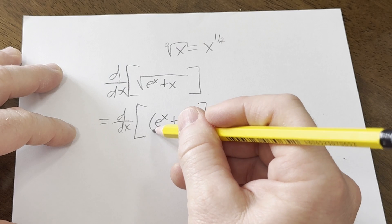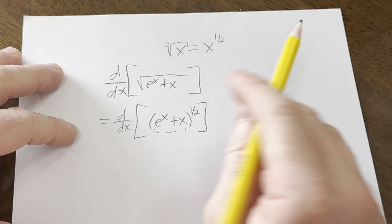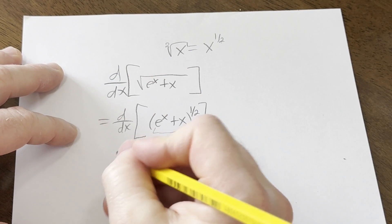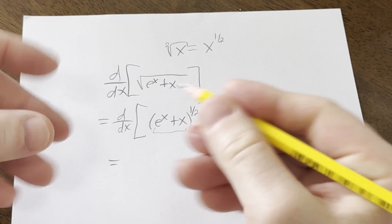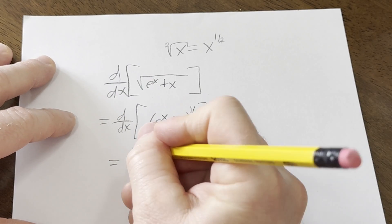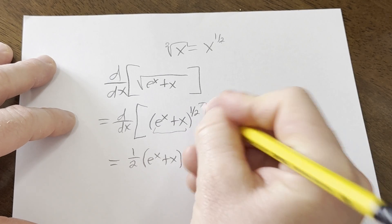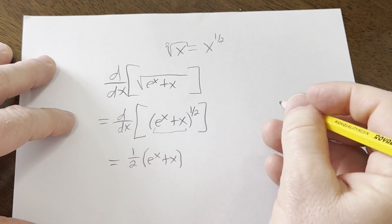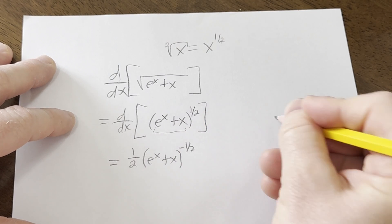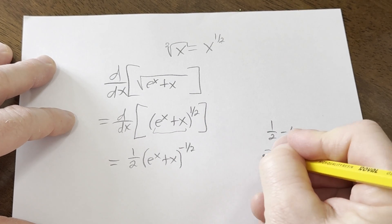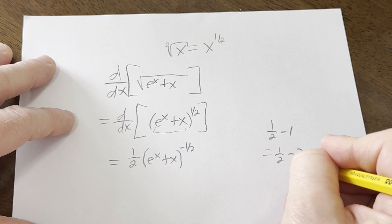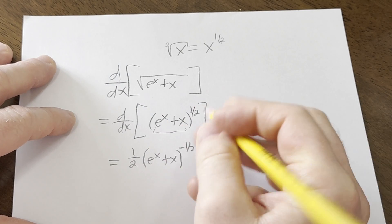So here the inside function is e to the x plus x, and the outside function is the power function. So now I'm going to drop the d/dx, we're taking the derivative. So bring the 1 half down, leave the inside untouched, e to the x plus x. Subtract 1 from the exponent. 1 half minus 1 is negative 1 half. It's 1 half minus 1, which is 1 half minus 2 halves, which is negative 1 half. That's the power rule.